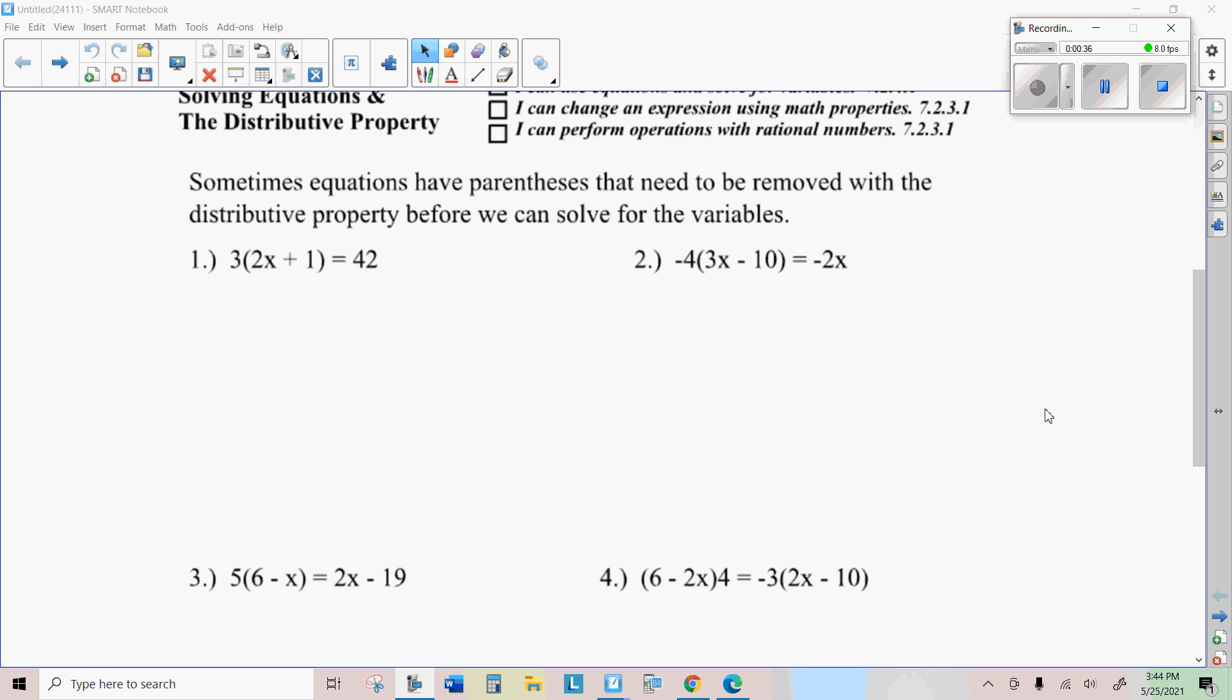but if you have variables on both sides, like number two here, then for sure you're going to want to rewrite this. So you're going to want to multiply negative four times each of these things,